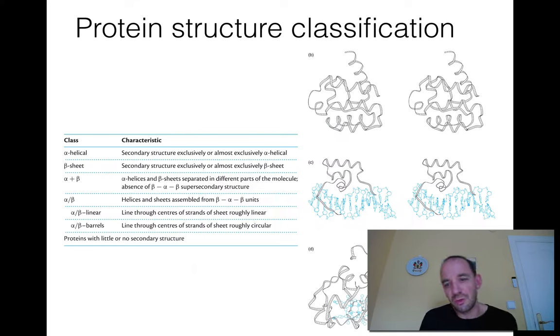These protein structures are often classified into different categories. From the structure, you can learn about the function. For instance, proteins that bind to DNA often have an alpha helix. There are many classification systems. For many years, a lot of homology was based on studying structure, because structure is more conserved than sequence. It's easier to find homology between two proteins if you know the structure than if you only know the sequence.